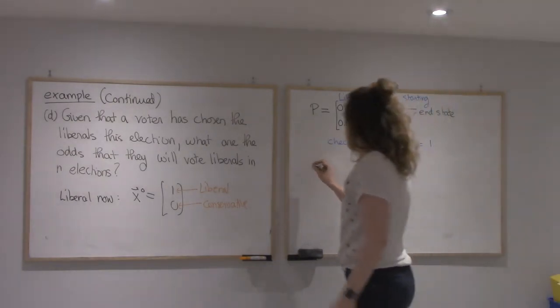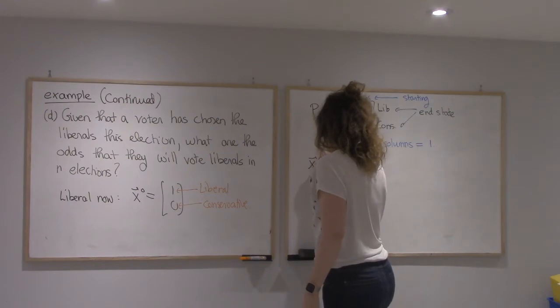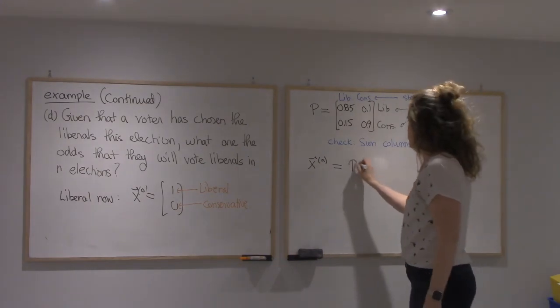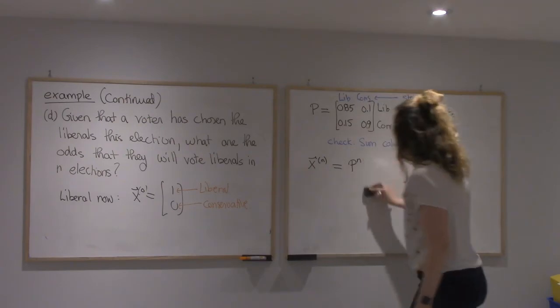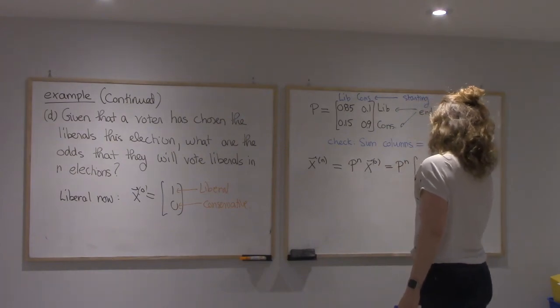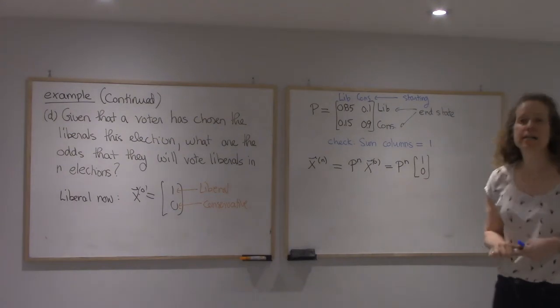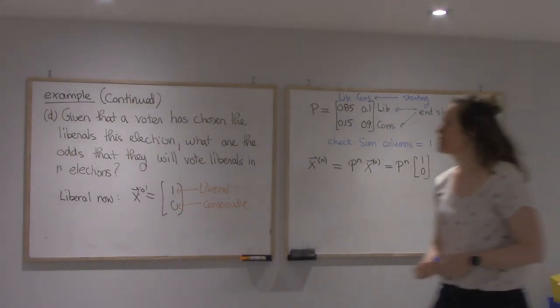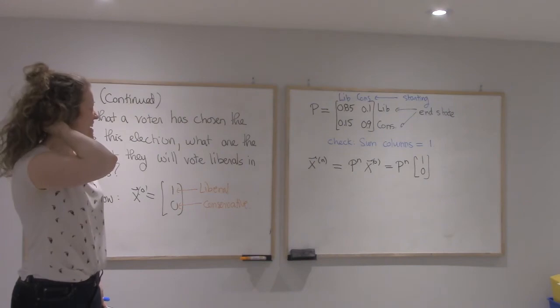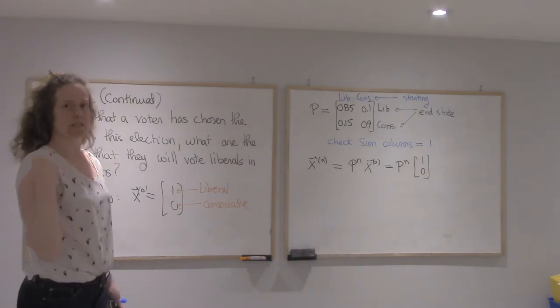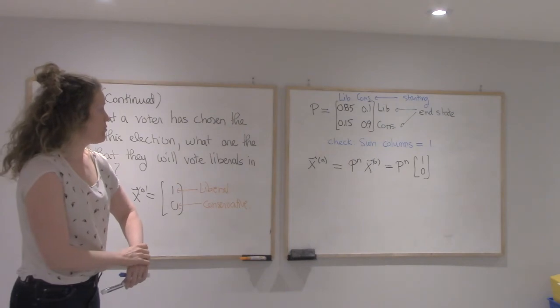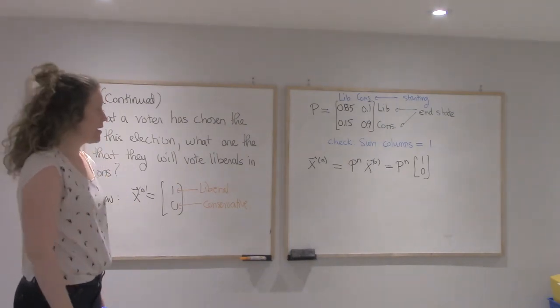All right, so n elections from now, that means I need to compute P^n times x_0. I don't have a specific n in this question. My answer will have n in it. So that means I can't really just brute force this and compute P times P times P times P. I need to be a bit clever. I need to use what we've learned in diagonalization of matrices. I need to diagonalize P to be able to take big powers.